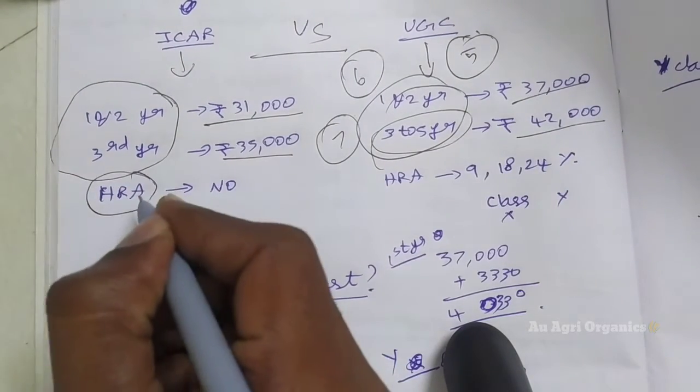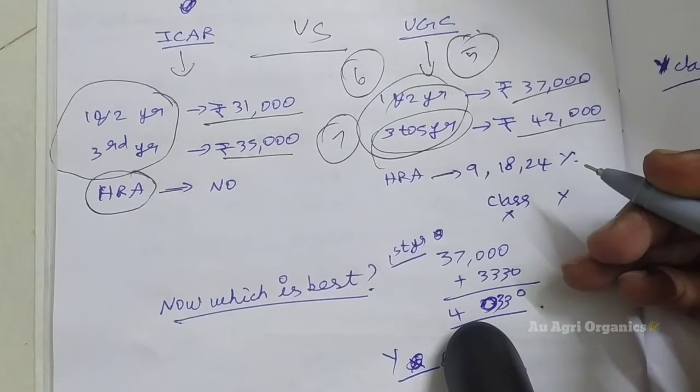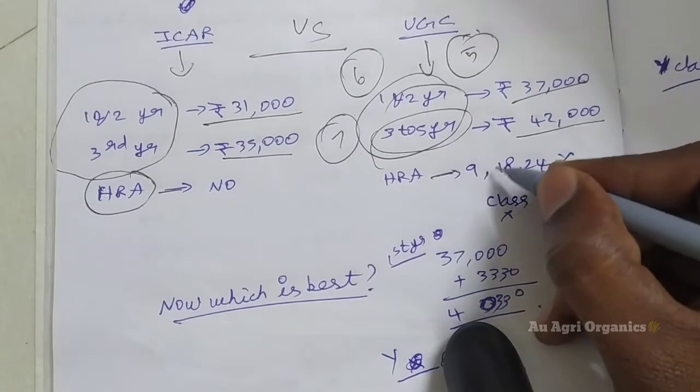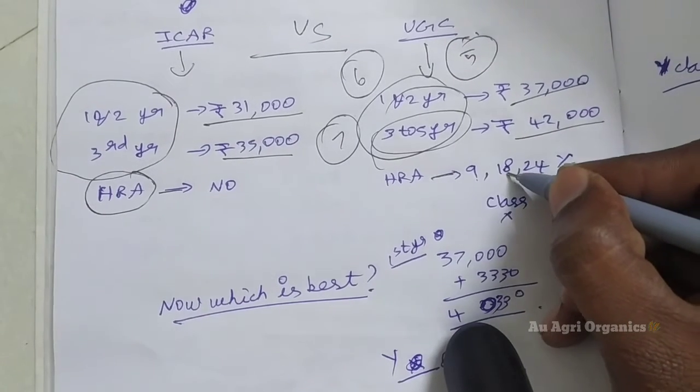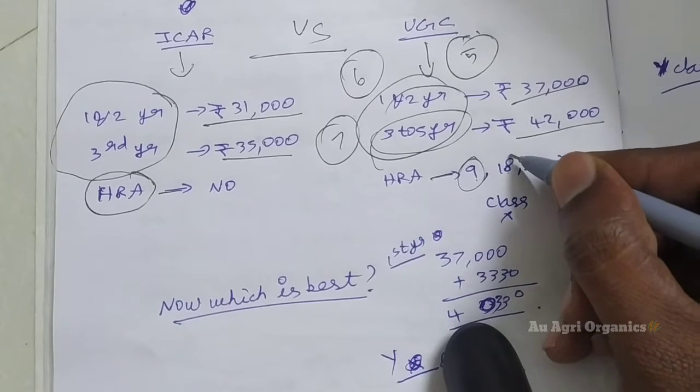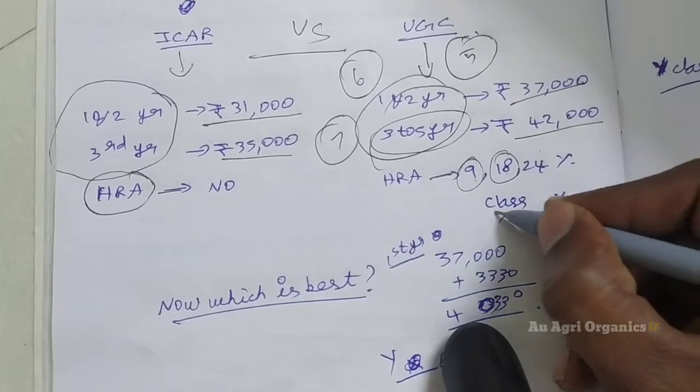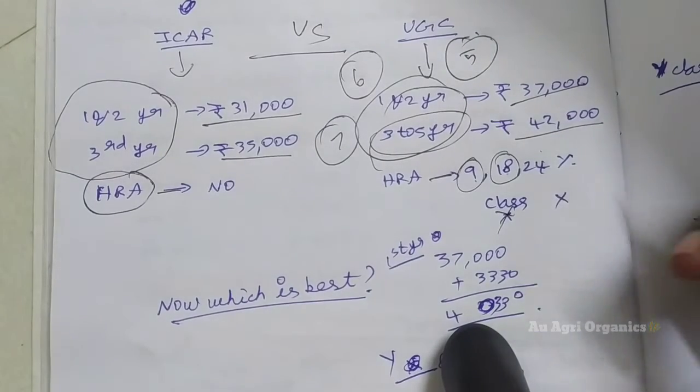Next is HRA. This is house rent allowance, you may know. So in ICAR, there is no house rent allowance. But in UGC, there is the house rent allowance of 3 types. One is 9%, 18%, and 24%. So this is for no class cities. 18% is for Y class cities and 24% is for X class cities.